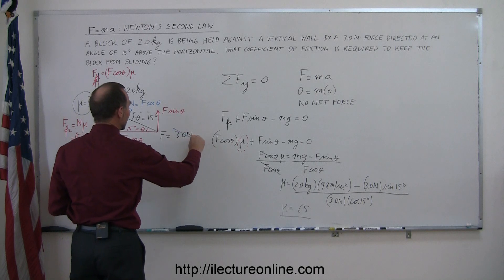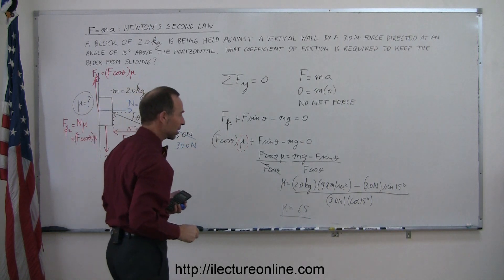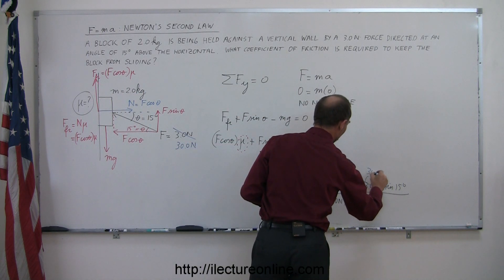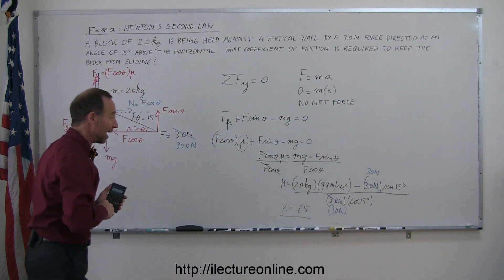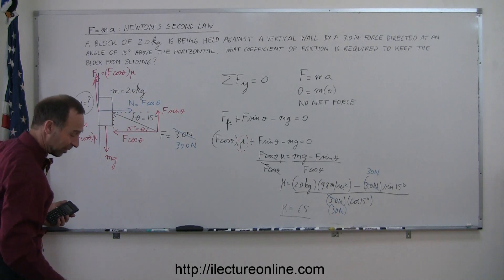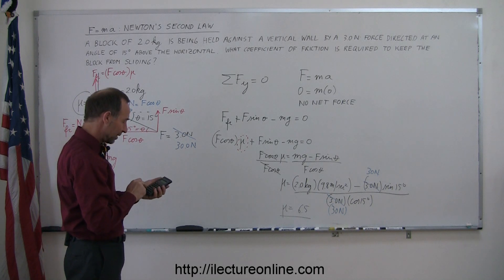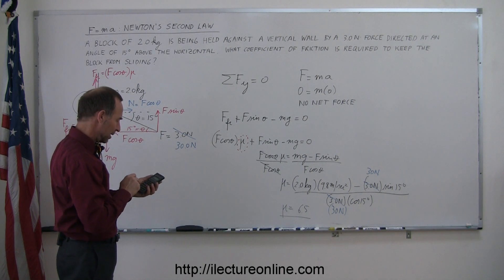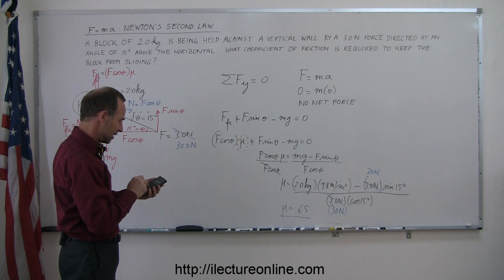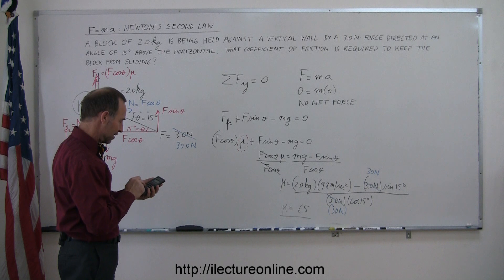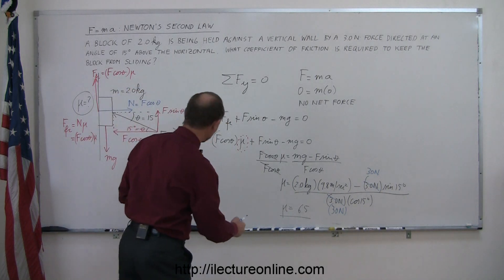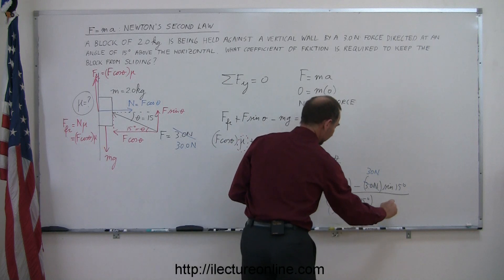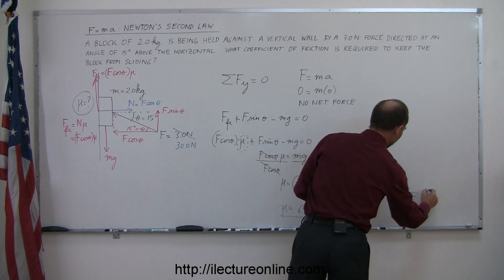If the force is instead 30 Newtons, let's see what we get. Could I have a friction force large enough to keep the block from sliding? We have 19.6 minus the quantity 30 times sine of 15, divided by 30, divided by cosine of 15. That gives something that looks a lot more plausible.